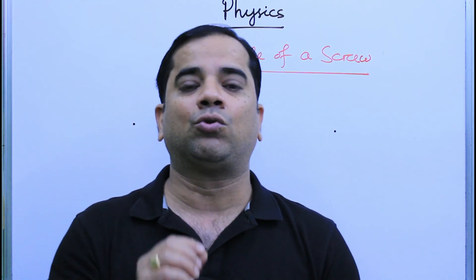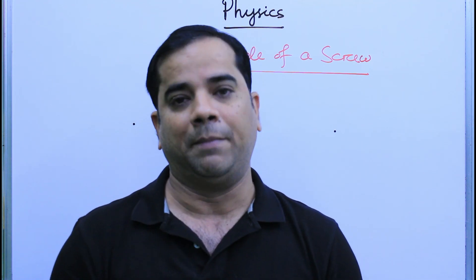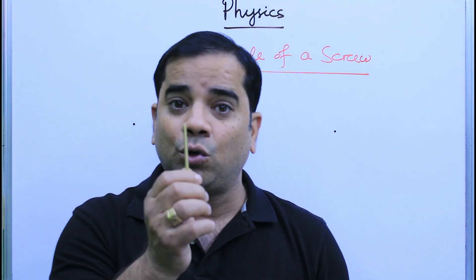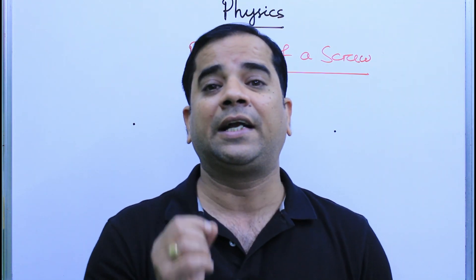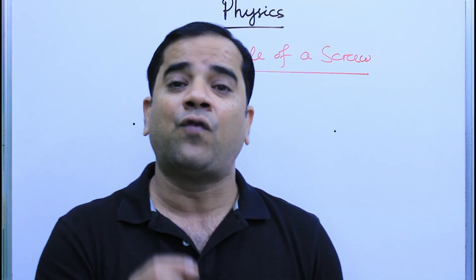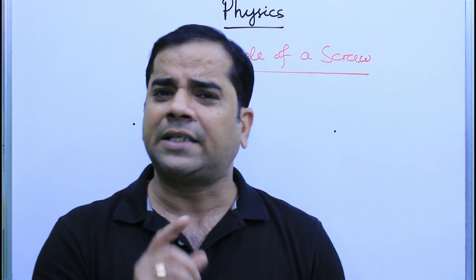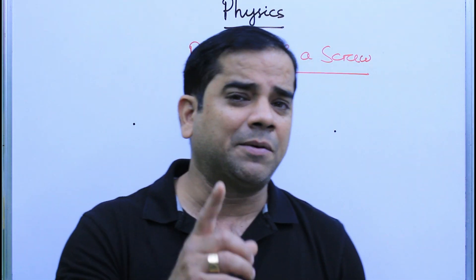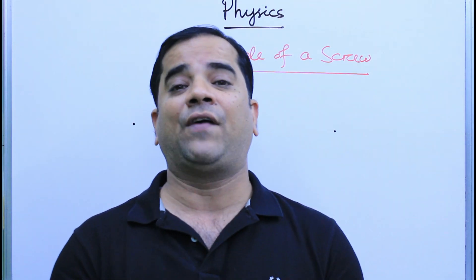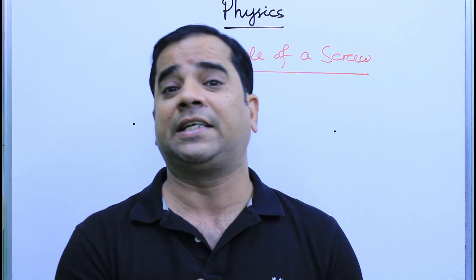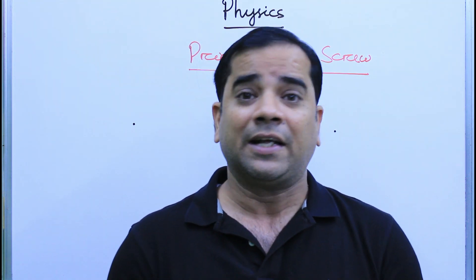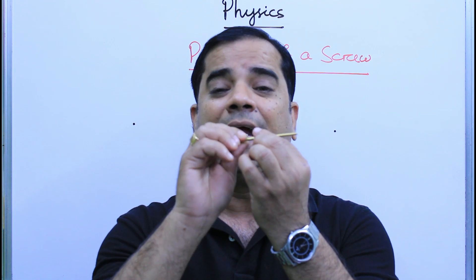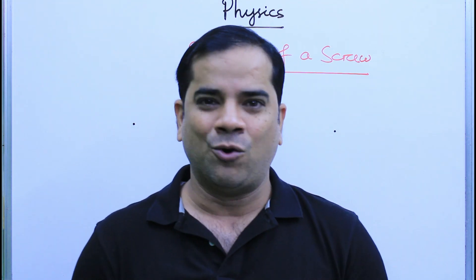In general, the distance between two consecutive threads is one millimeter. With one rotation of the screw, the screw moves a linear distance of one millimeter. This is nothing but the pitch of the screw. The pitch of the screw can be defined as the linear distance it travels whenever the head of the screw completes one full rotation.